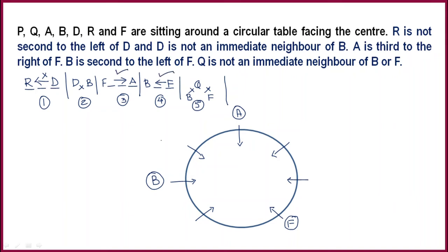Now, B can't have Q as immediate neighbor, and F can't have Q as immediate neighbor. So Q can't come in these positions. Because of this negative clue, you can easily make out where Q is going to come. Now, D and B cannot be immediate neighbors. So D can't come here or here. This is a negative clue.